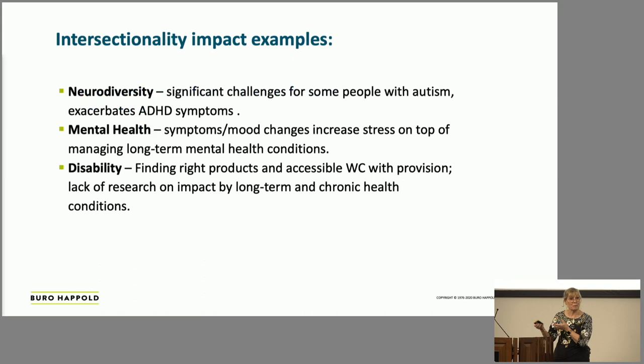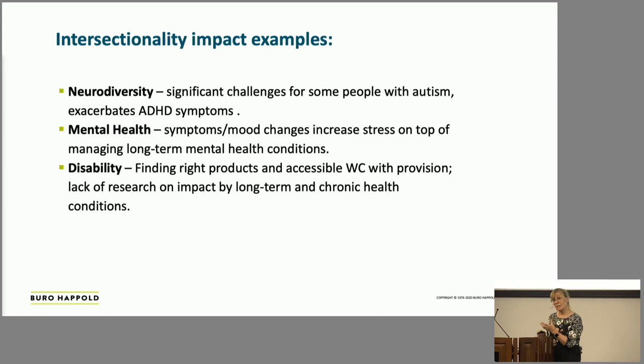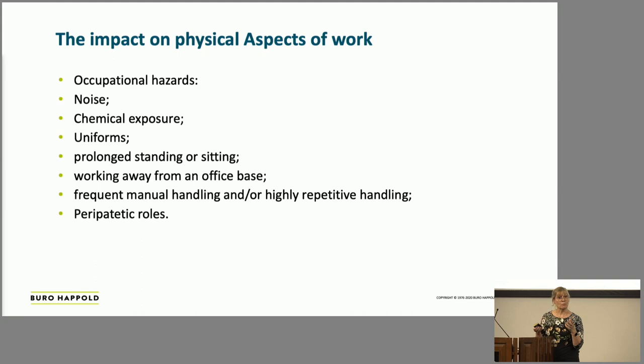Another intersectionality example is neurodiversity. I was working on a PAS around designing for neurodiversity — a broad umbrella term covering all neurocognitive types, including people with neurodivergent conditions such as ADHD and autism. We know that people with some of those traits will experience a different type of menopause — they may have been self-managing their sensory difference, and suddenly it changes because of menopause. Suddenly you get a hormonal change and everything's different again.